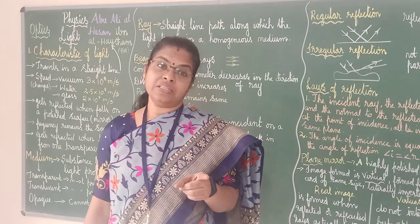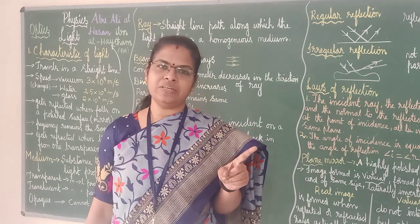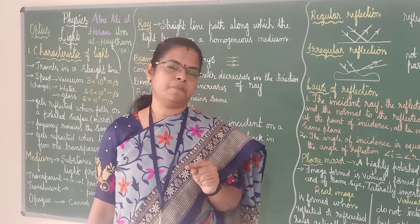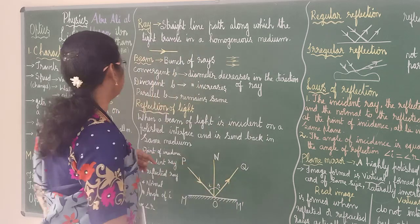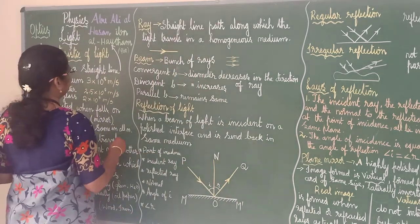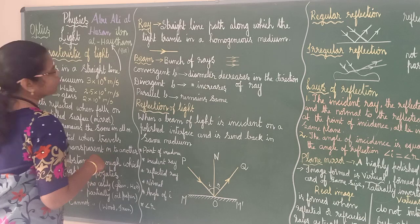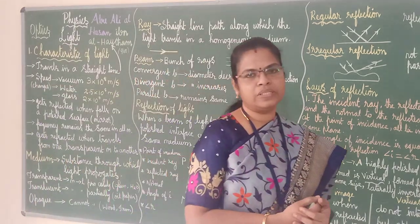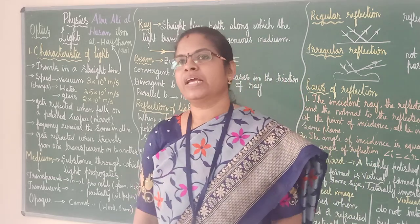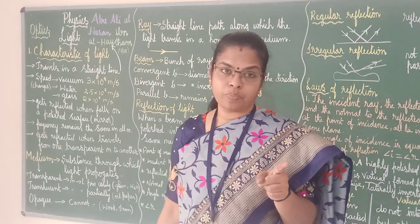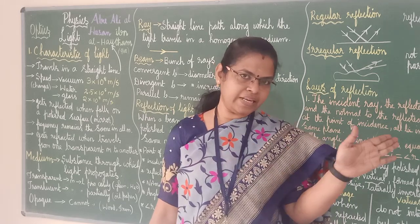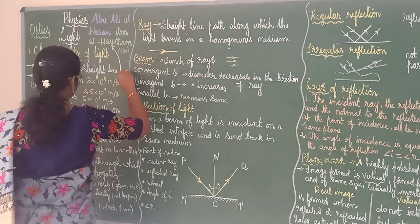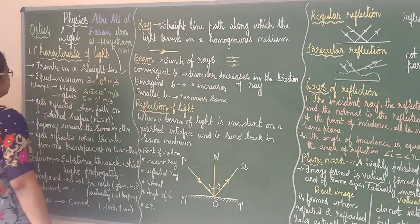Rectilinear propagation of light — light always travels in a straight line. That is called rectilinear propagation. Try to find out the spelling. Rectilinear propagation — what is rectilinear propagation? Light always travels in a straight line. That is called rectilinear propagation.